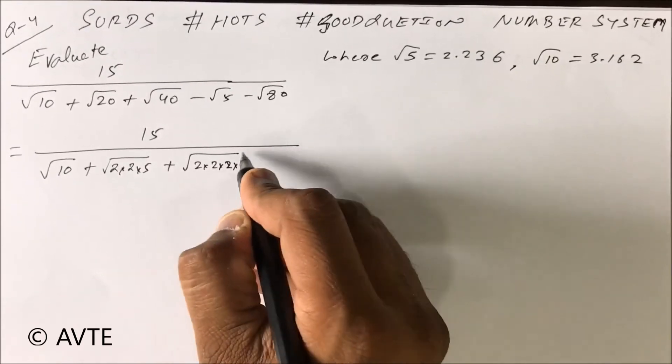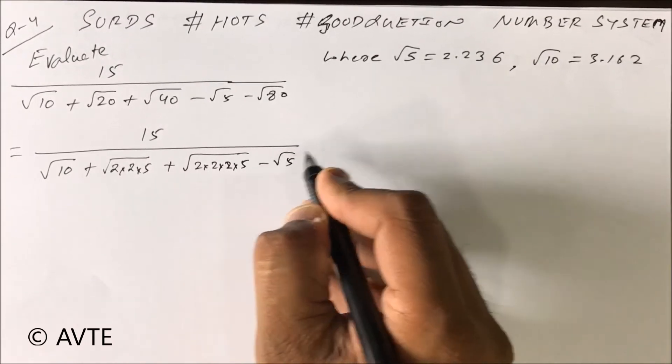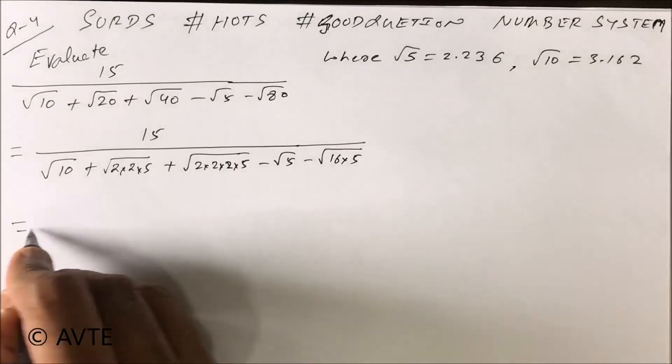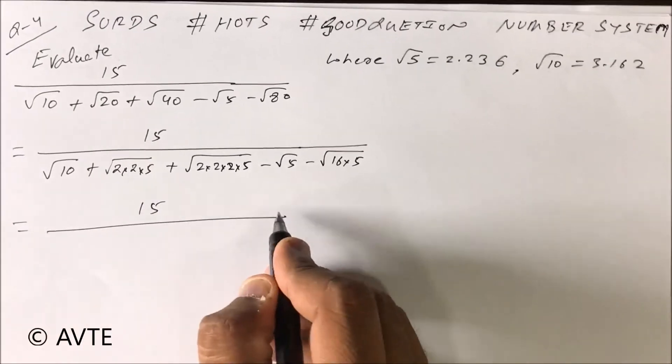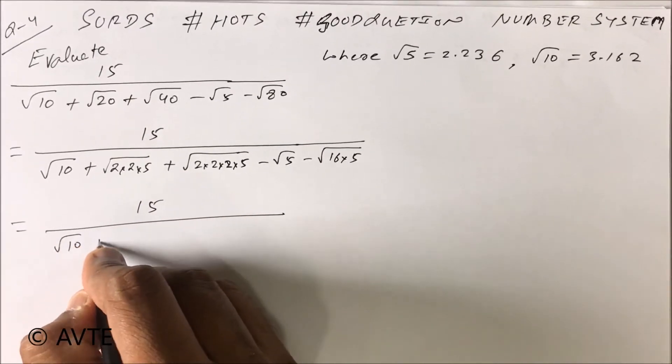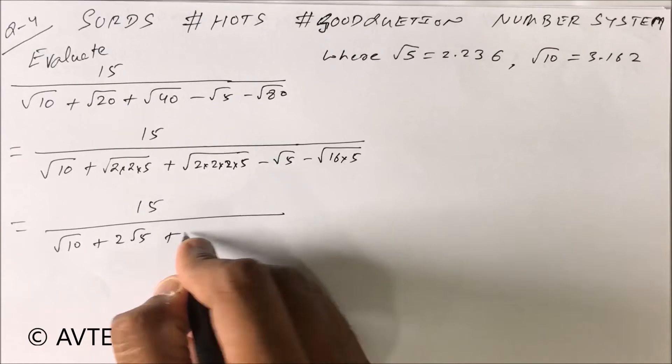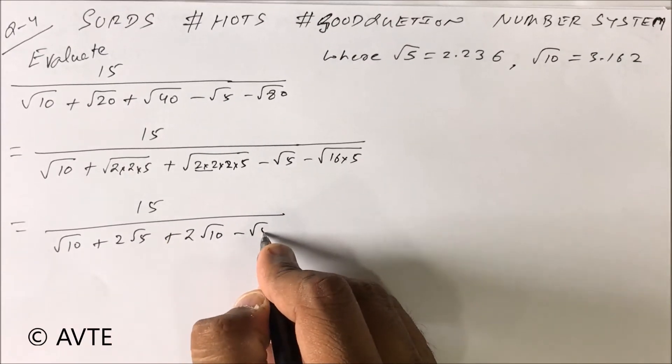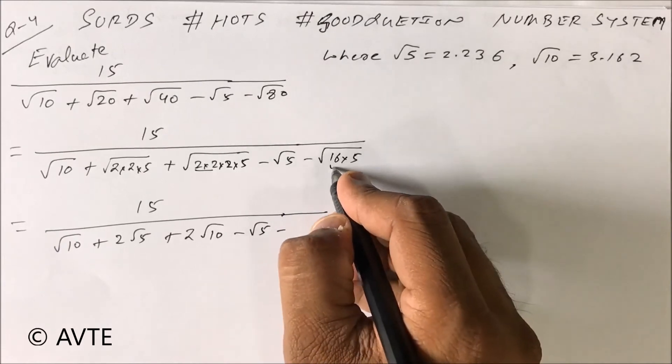Root 5 cannot be changed, and root 80 can be changed into 16 into 5. So this is root 10 plus 2 root 5 plus 2 root 10 minus root 5 minus 4 root 5.